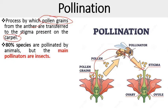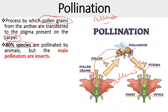Here we use two terms: pollinator and pollinizer. Pollinator is the term used for agencies like bees, flies, bats, moths, and birds. Pollinizer is the plant that serves as the source of pollen grains. So 80 percent of plant species are pollinated by animals, but the main pollinators are insects. Insects play a very important role in the transfer of pollen from one plant to another.